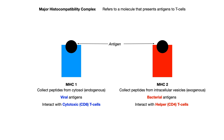MHC1 collects peptides endogenous in the cytosol, whereas MHC2 collects exogenous peptides, and those get stored in intracellular vesicles. For that reason, MHC1 tends to present viral antigens, while MHC2 tends to present bacterial antigens. MHC1 interacts with cytotoxic T cells or CD8 T cells, whereas MHC2 interacts with helper T cells or CD4 cells.